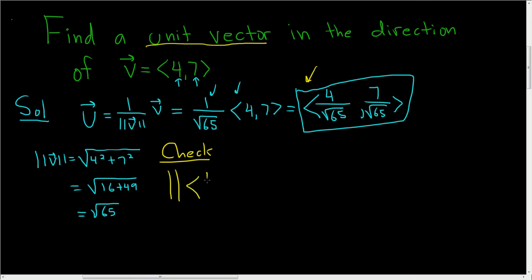So we're taking the magnitude of this vector, so 4 over the square root of 65, 7 over the square root of 65.